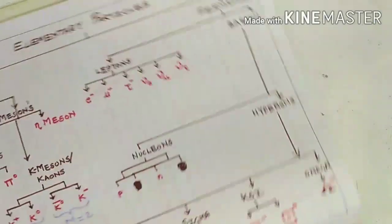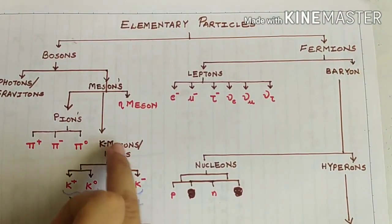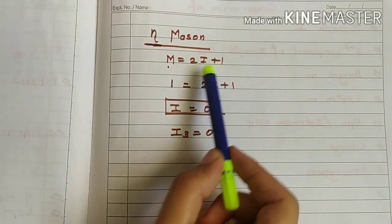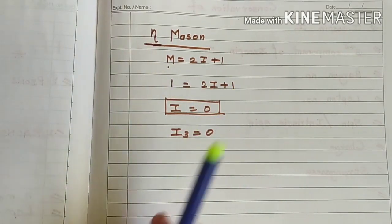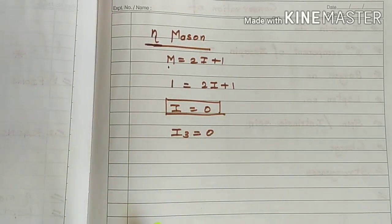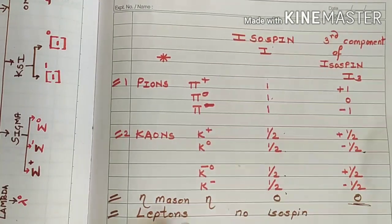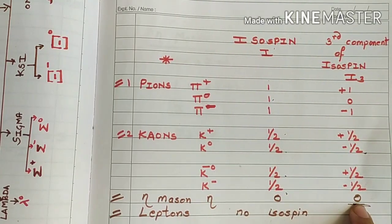The next particle is the eta meson. Looking at the chart of elementary particles, the eta meson is singular, so it has multiplicity m = 1. Using the equation m = 2i + 1 and putting m = 1, we get 1 = 2i + 1, which gives i = 0. Since i = 0, consequently i3 would also be 0. So for the eta meson, both the isospin and the third component of isospin have the value 0.